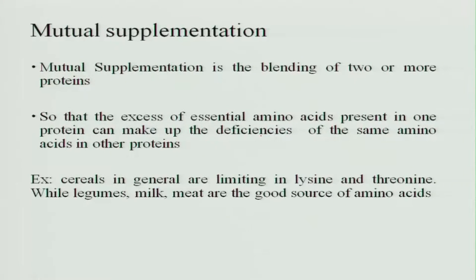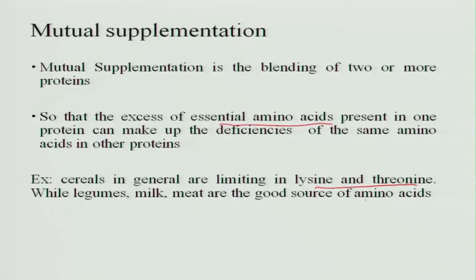Mutual supplementation is blending one or two proteins to get a complete protein, so that the excess of essential amino acids present in one protein can make up the deficiency of the same amino acid in the other protein. For example, the amino acids lacking in cereals are present in excess in pulses and vice versa. Therefore, when you combine cereals and pulses, you get a complete, good-quality protein — a good source of lysine and threonine.